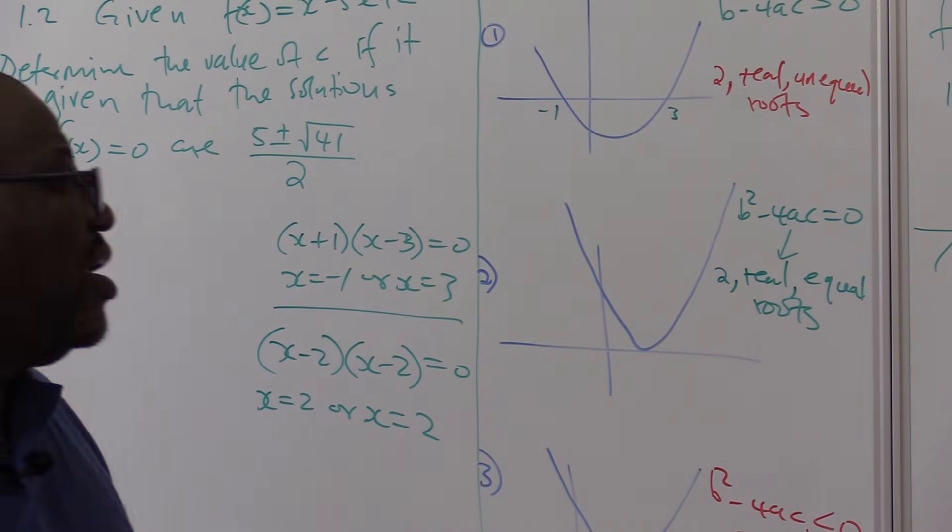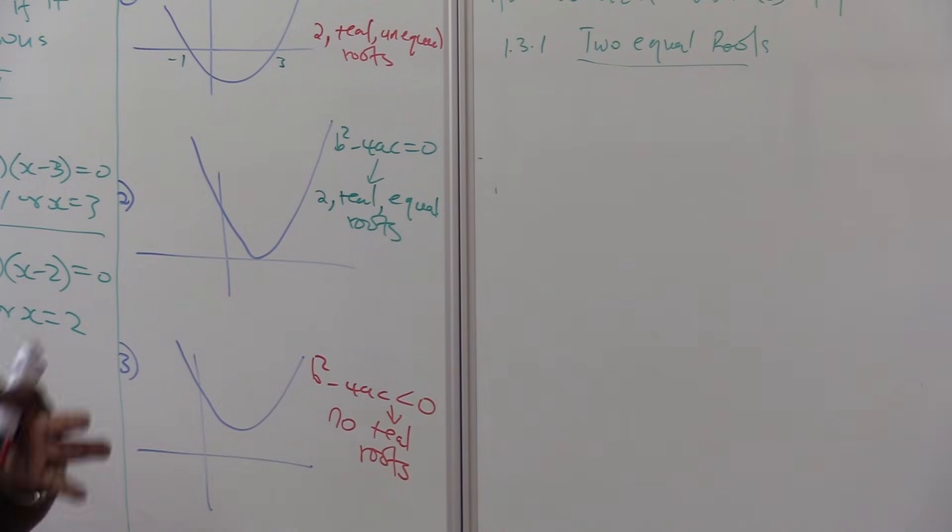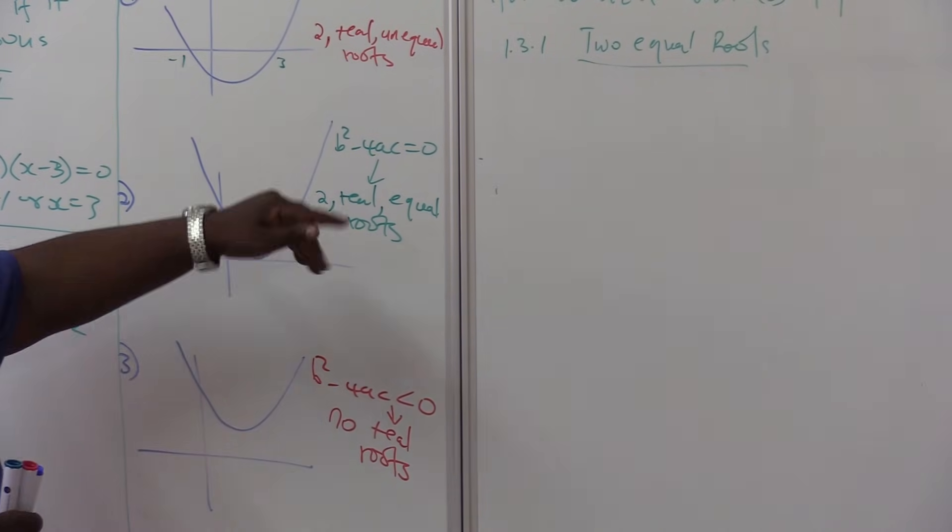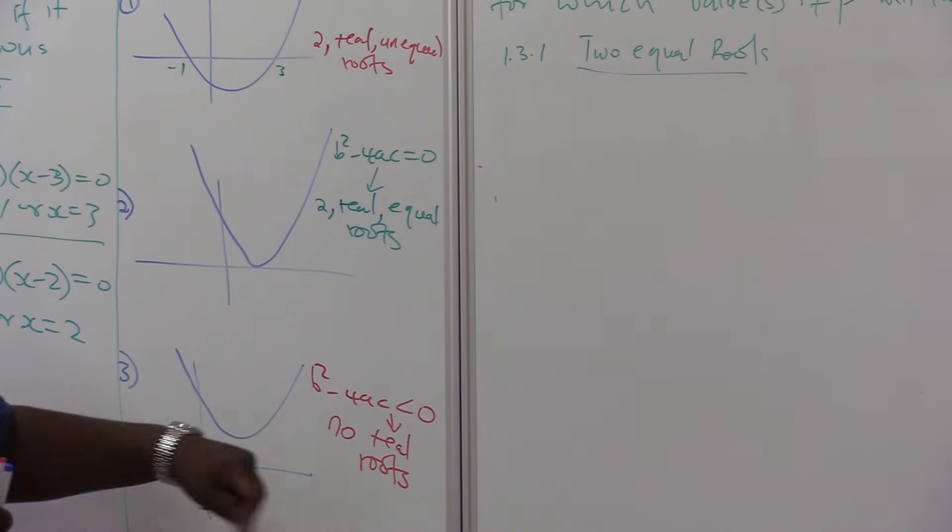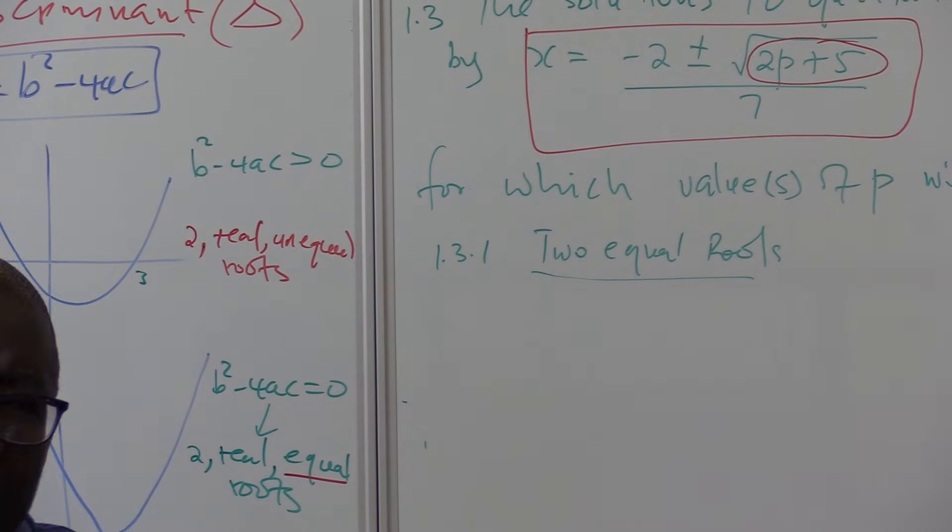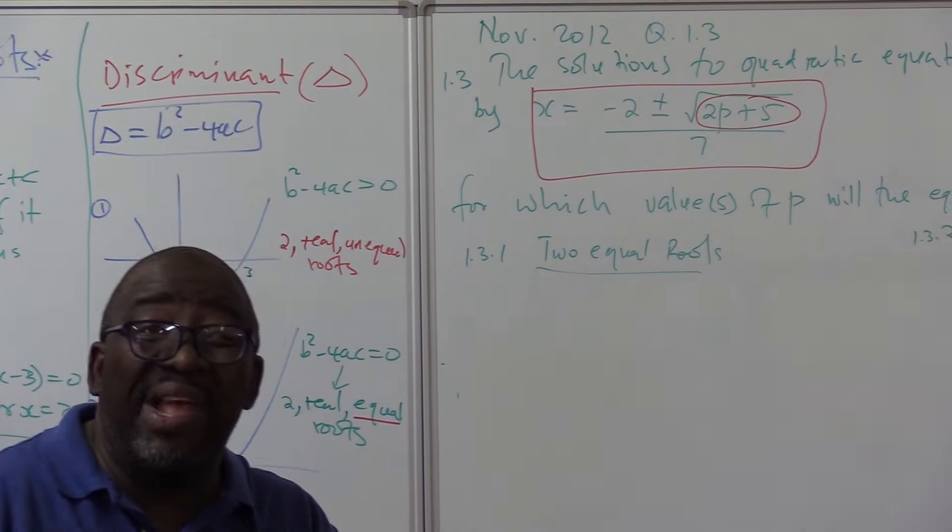Now let us see how they set this section in the examination. When you read, you look for these keywords: equal, unequal, non-real or imaginary roots. Why can't they say value? Why do they include both value or values?